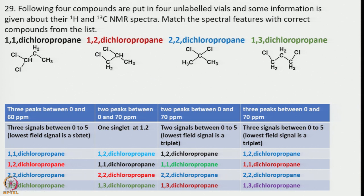Let us focus our attention on the 1H NMR of the first molecule, 1,1-dichloropropane. All 3 hydrogen atoms are different, so in 1H NMR we expect 3 signals, and also in 13C we anticipate 3 signals. The most deshielded one — if you look into this — should give a triplet by coupling. So the lowest field signal is a triplet.